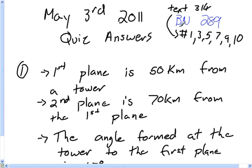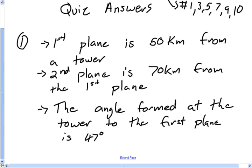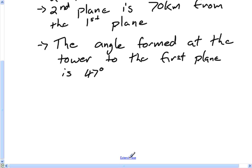We're going to take up the quiz today. The very first question on the quiz was rewritten the day of the quiz. So this is what the actual question said. It said the first plane is 50 kilometers from a tower.